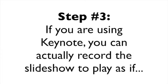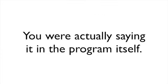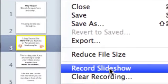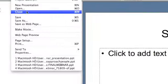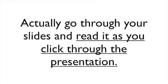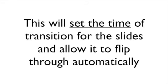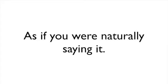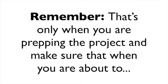Step number three, if you're using Keynote, you can actually record the slideshow to play as if you were actually saying it in the program itself. Just go to File, then Record Slideshow. If you're using PowerPoint, click File, then Record Movie. Actually go through your slides and read it as you click through the presentation. This will set the time of transition for the slides and allow it to flip through automatically as if you were naturally saying it. Remember, that's only when you're prepping the project, and make sure that when you're about to start recording on your camera that you turn off your sound.